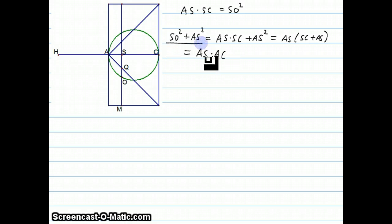So if we take this is equal to that, we can say SO squared plus AS squared equals AS times AC. If we multiply both sides of this equation by AC times pi, both sides, we get this. AC bracket pi SO squared plus pi AS squared equals AS times pi AC squared.